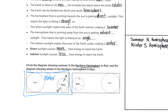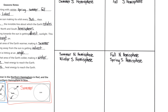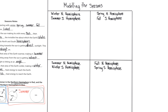When it's summer in the north, it's winter in the south. When it's winter in the north, it's summer in the south. And in the picture on the right, the north is tilted slightly toward the sun, the south is tilted slightly away from the sun — that makes it summer in the northern hemisphere, which means it would be winter in the southern hemisphere. Let's move on to our modeling of the seasons, looking at the position of the earth and the sun for each of the different seasons.